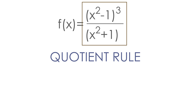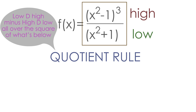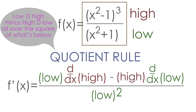To make this easier, I like to label the two parts. I'll label (x² - 1)³ the "high" and (x² + 1) the "low". Now we can use the quotient rule formula: low d-high minus high d-low, all over the square of what's below. That means the low multiplied by the derivative of the high, minus the high times the derivative of the low, all divided by the low squared.